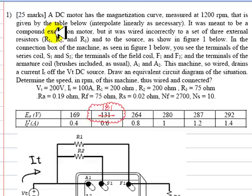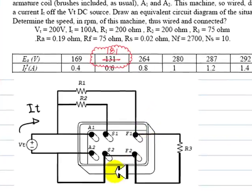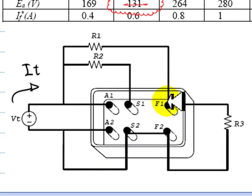The motor was meant to be a compound excitation motor but it was wired incorrectly. This box represents the DC motor. These are the terminals F1 and F2 of the shunt field coil, S1 and S2 are the terminals of the series coil, and A1 and A2 are the terminals of the armature coil.